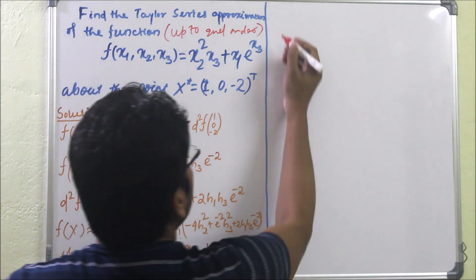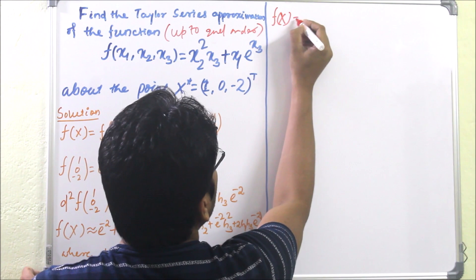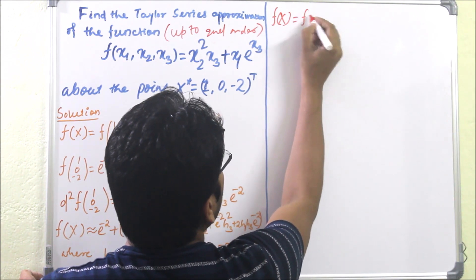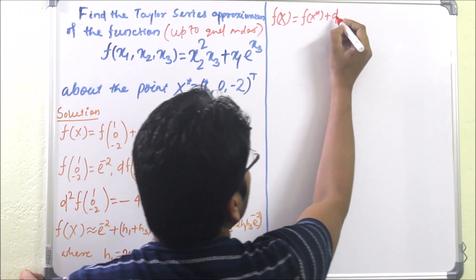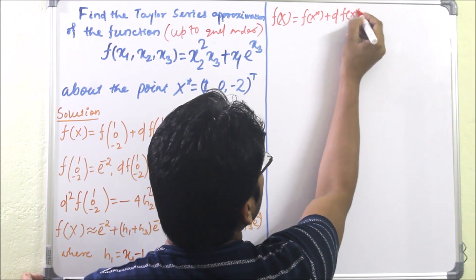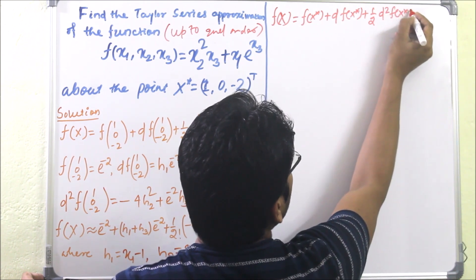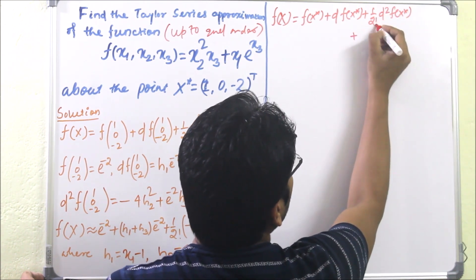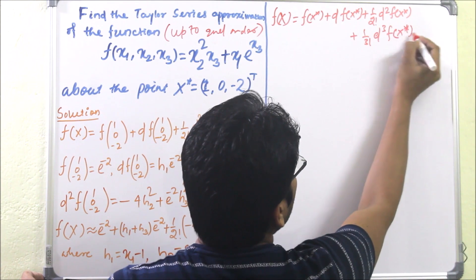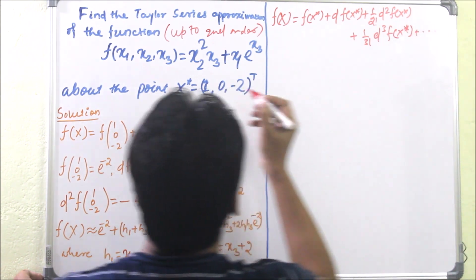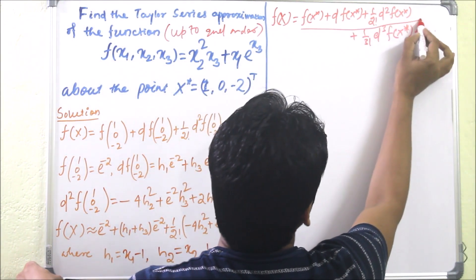We know that if f is a function and it is infinitely many times continuous at some point x star, then f(x) will be f(x*) plus the first differential df(x*), plus one-half times the second differential d²f(x*), plus one over 3 factorial times the third differential, plus so on. Here it says up to second order, so we consider up to this term.